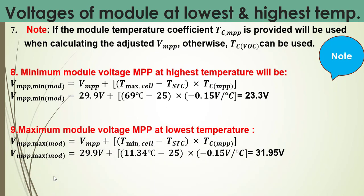We also calculate the maximum module voltage at maximum power point at lowest temperature. Using the same formula, V_MPP at lowest temperature equals 31.95 volts. We now have Voc and V_MPP values for the module at both lowest and highest temperatures of the specified location.